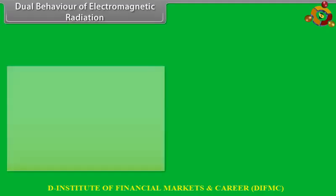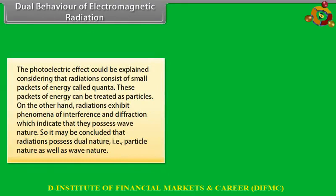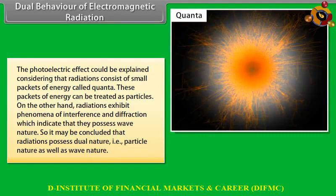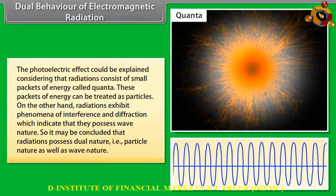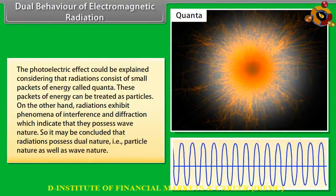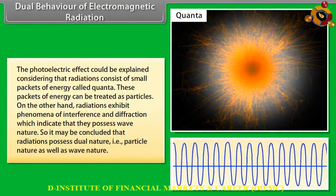Dual behavior of electromagnetic radiation: The photoelectric effect could be explained by considering that radiations consist of small packets of energy called quanta, which can be treated as particles. On the other hand, radiations exhibit interference and diffraction, indicating wave nature. It may therefore be concluded that radiations possess dual nature — both particle nature and wave nature.